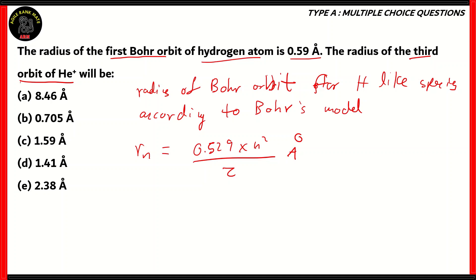n stands for the number of orbit. Z here stands for the atomic number. Our atom here is helium. The species here we have is helium plus, and we are asked to identify the radius of the third orbit. In this case, our n will be equal to 0.529 times 3 squared divided by 2.